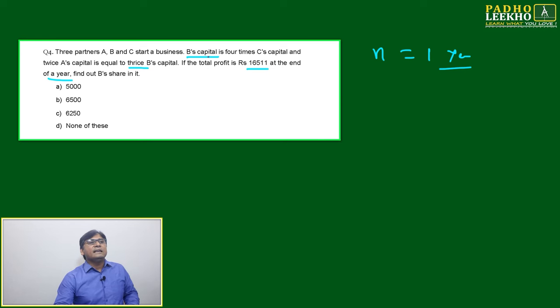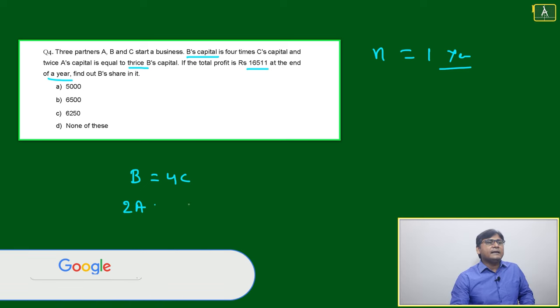Here it's telling B's capital is four times C, means B = 4C. Next, twice A's capital equals thrice B's capital, which means 2A = 3B. This is what's given, nothing more.